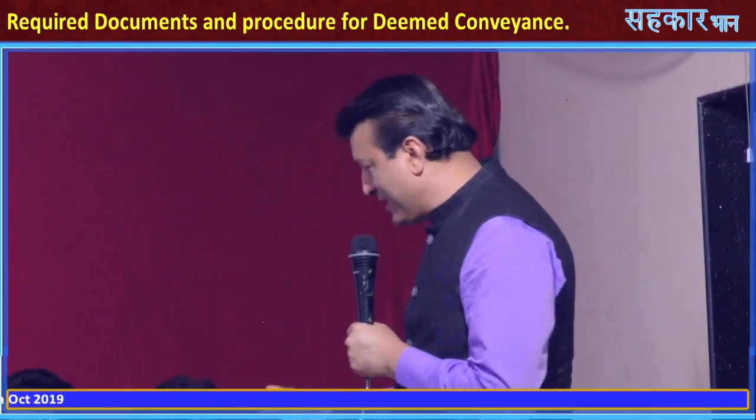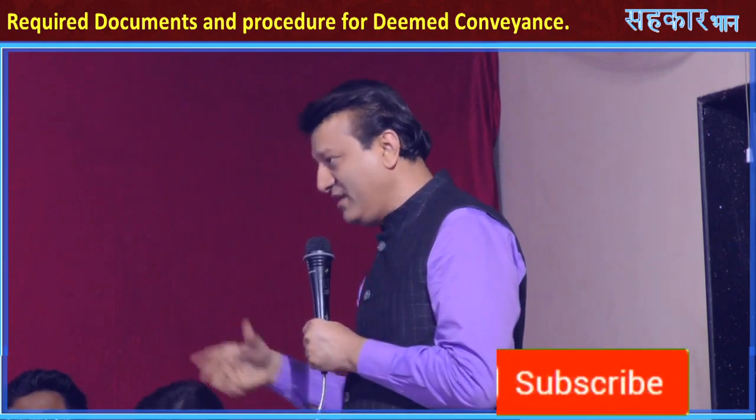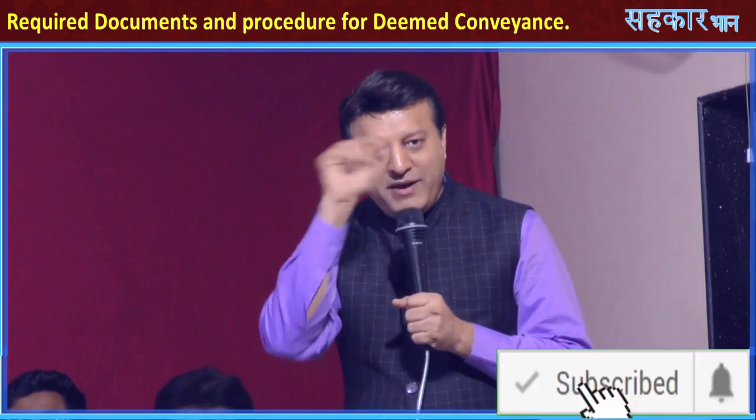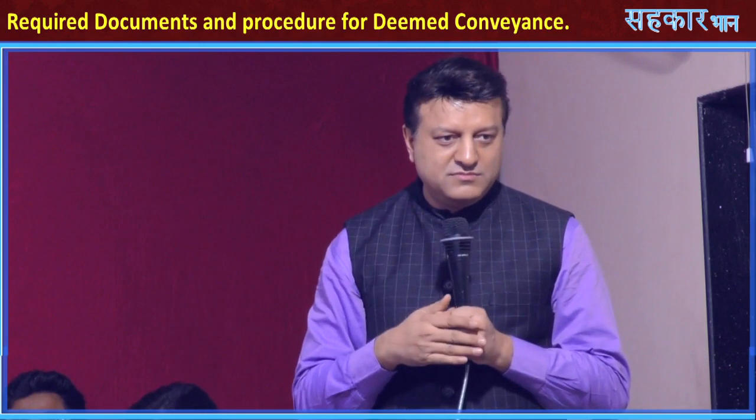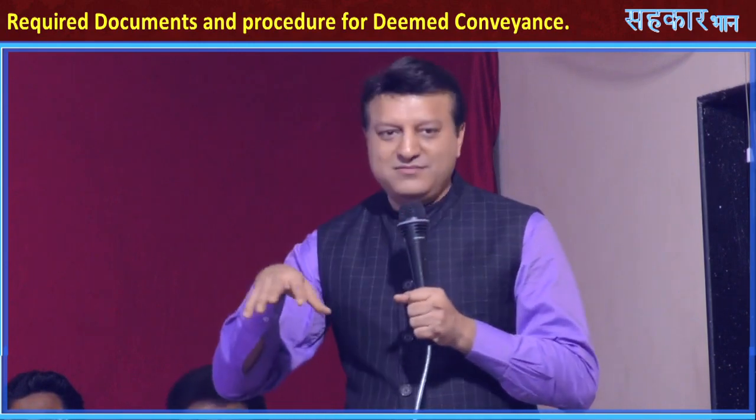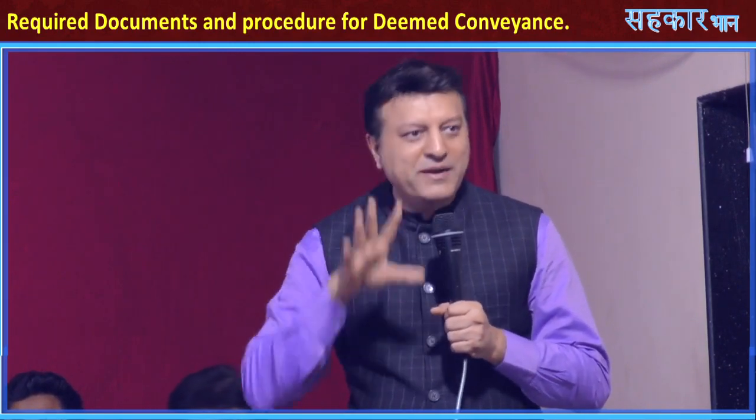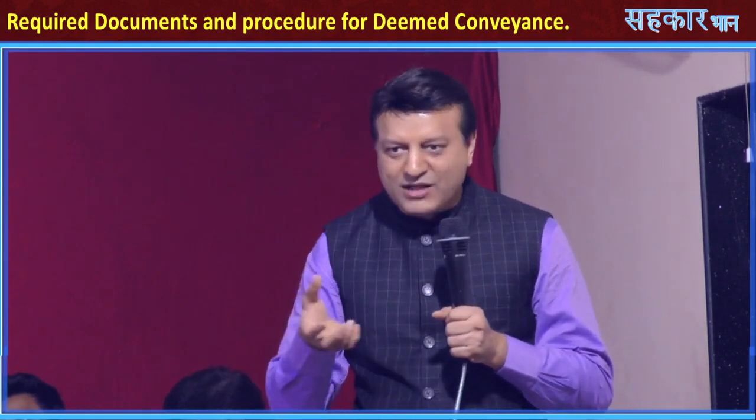Now let me tell you about the problem with the online process. The government's definition of 'online' means taking all physical copies, scanning them and uploading them — which is a very big problem. What we presume online means is filling in the blanks and submitting. What happens many times is when you upload the building plan, PR card, agreement copies, the system hangs and you are not able to upload. But the bottom line is it's an online application called Form Number 7.